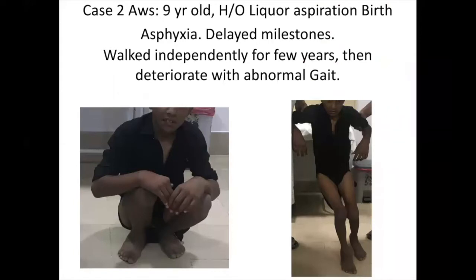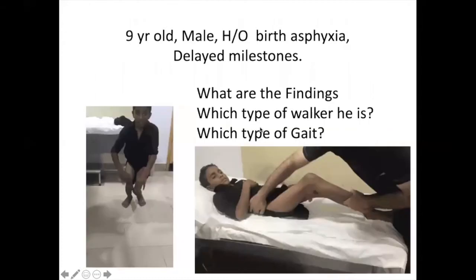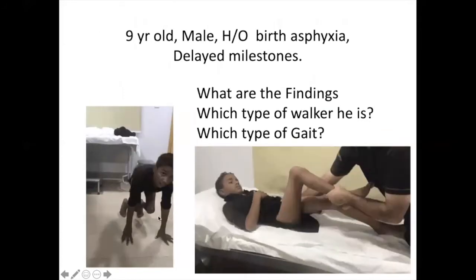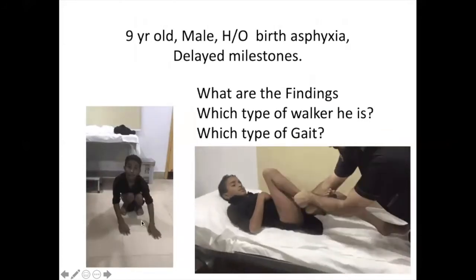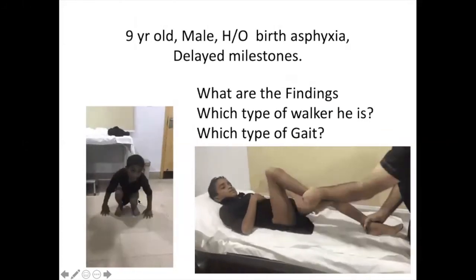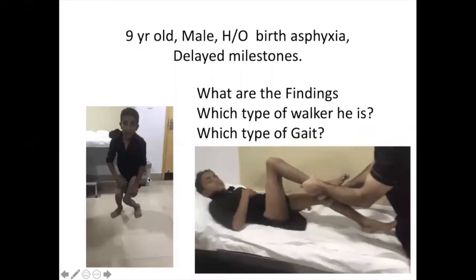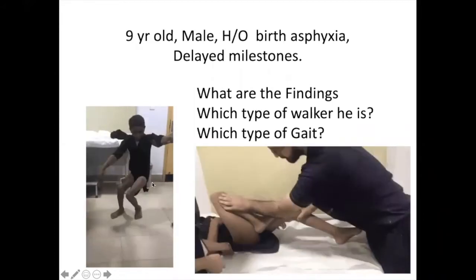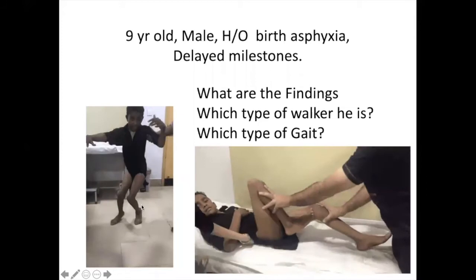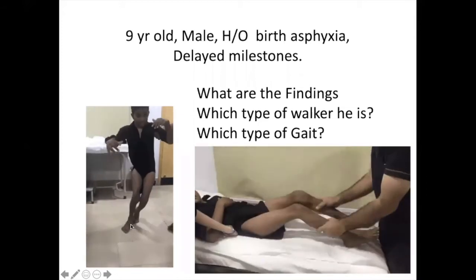A nine-year-old child with birth asphyxia and delayed milestone. He walked — he was a good walker up to the age of seven years. After seven years he got decompensation. He was able to walk but sometimes needs support. Most of the time he needs support.